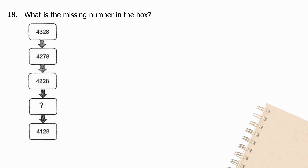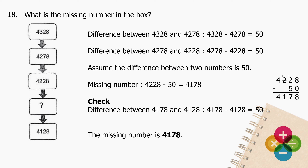Question 18: What is the missing number in the box? The difference between 4328 and 4278 is 50. The difference between 4278 and 4228 is also 50, so the pattern decreases by 50. The missing number: subtract 50 from 4228 and the difference is 4178. Cross-check: 4178 − 4128 = 50. The missing number is 4178.